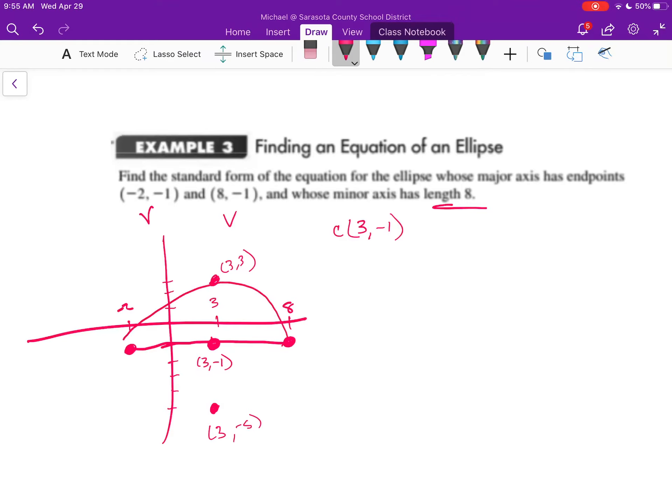And so now we've kind of got our ellipse going. Not drawn perfectly, but that's okay. And so this tells me that when I can start writing my equation on out, I'll have x minus 3 squared plus y plus 1 quantity squared.